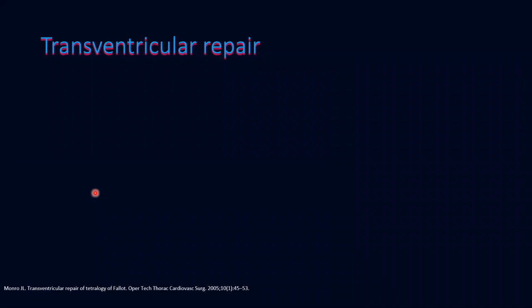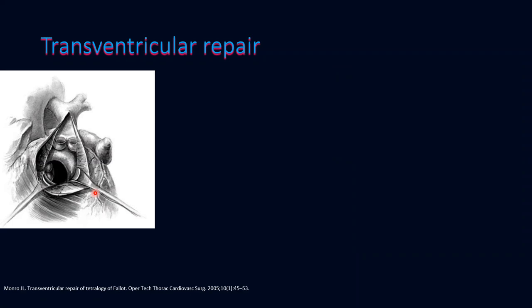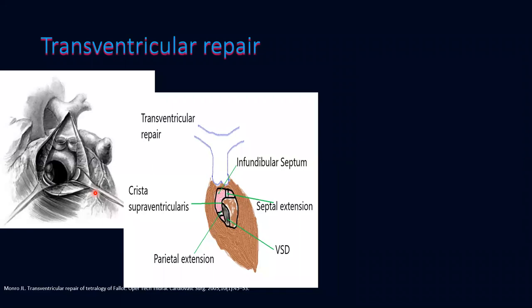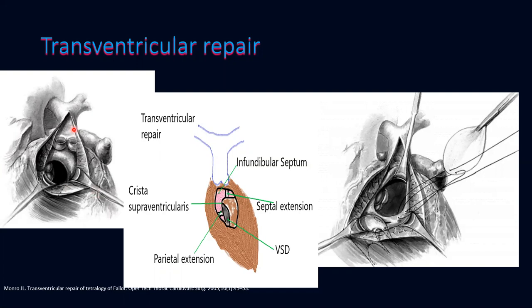The transventricular repair is now historical. It was the first surgery performed by Lillehei, Kirklin, and surgeons of that era — a large ventricular incision is made, the VSD is examined, and closure is performed through the ventricular incision. The picture depicting VSD anatomy and the muscle bundles is often asked during exams. On a ventricular incision, you see the infundibular septum and part of the crista supraventricularis. During transventricular infundibular resection, you divide the septal and parietal extensions of the crista supraventricularis, then close the VSD with a patch through the ventricular incision.